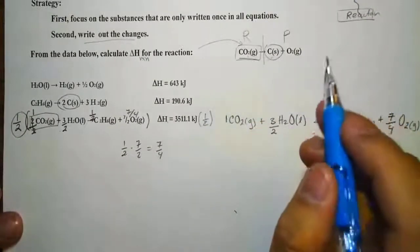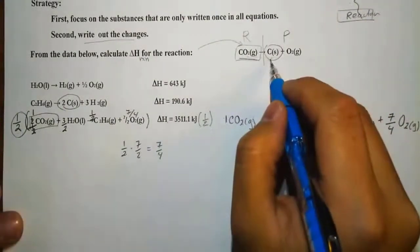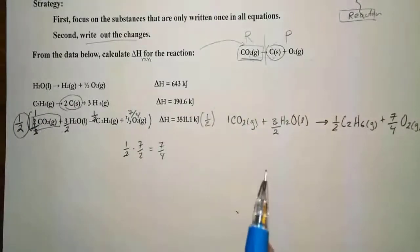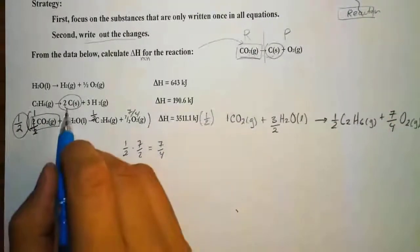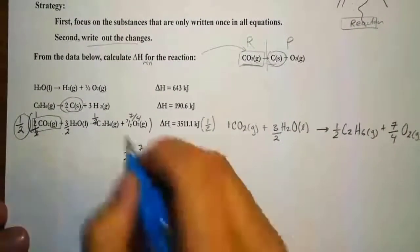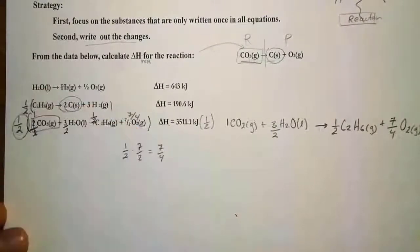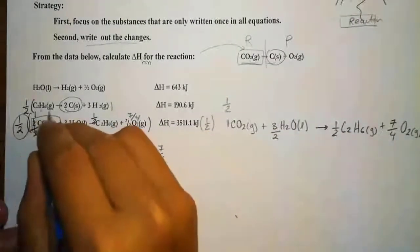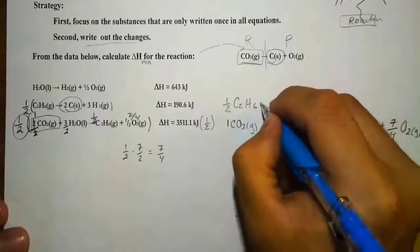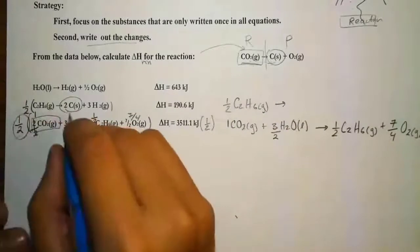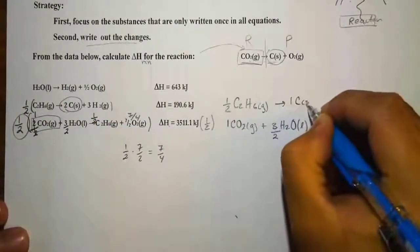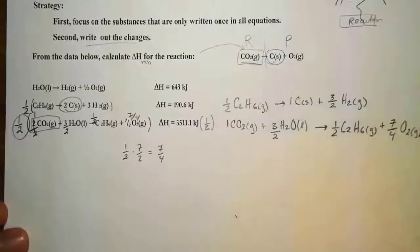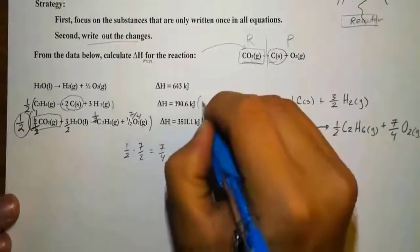Next, carbon is only written once and is already on the product side — the same side as our overall — so no flipping needed. But we have two carbons in that equation and only need one, so we multiply by one-half. That gives us one-half C₂H₆ (gas) producing one carbon (solid) and three-halves H₂ (gas). We also multiply this reaction's ΔH by one-half.